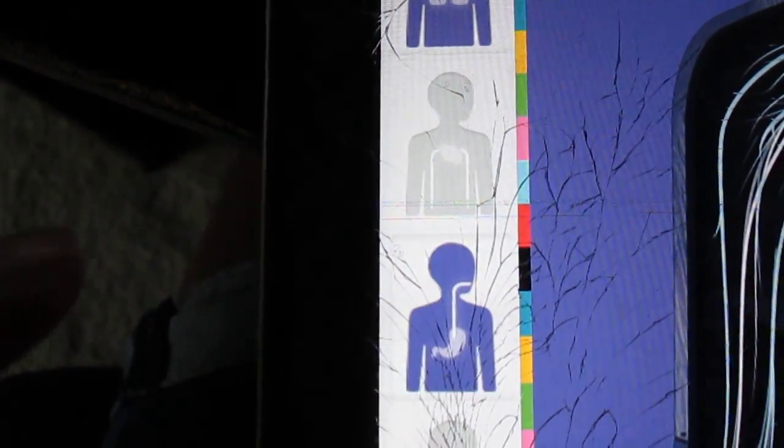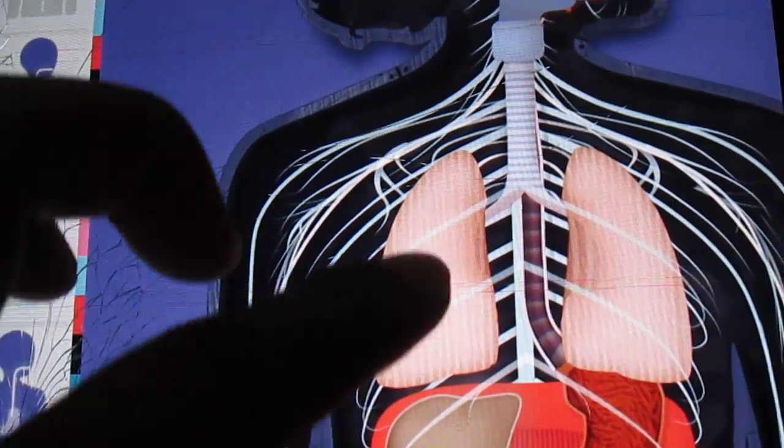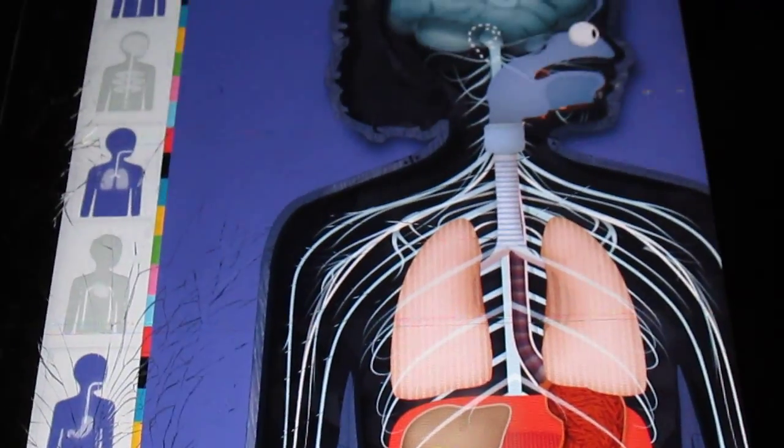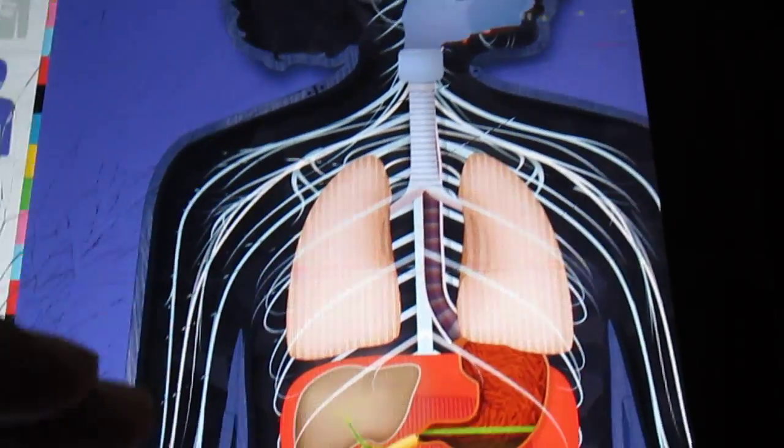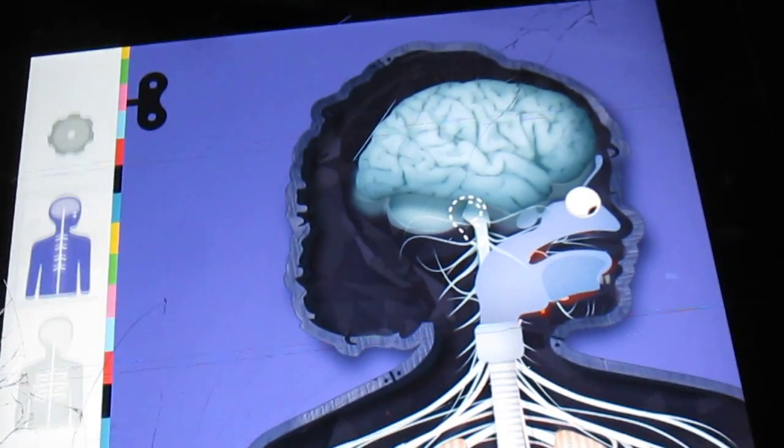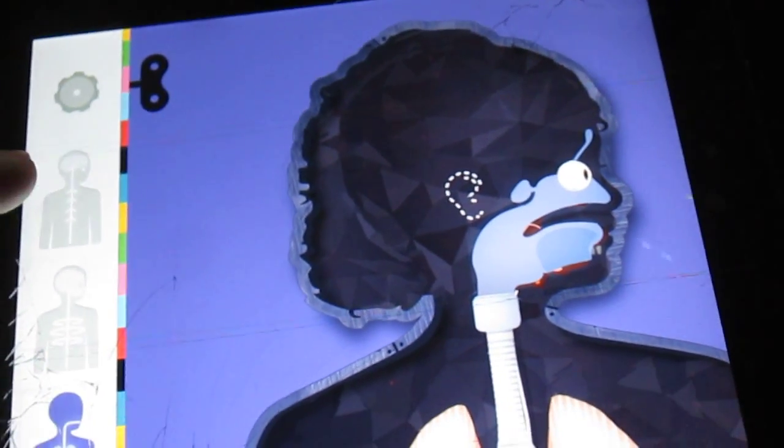So let's try the digestive system. Oh look, you can add. So now I have a bigger picture because I added all three systems. So now I've got my nervous system, my respiratory system, and my digestive systems. So I wonder if I go all the way back if it'll give me—oh no, I took it off.